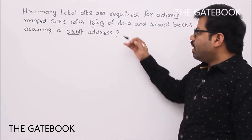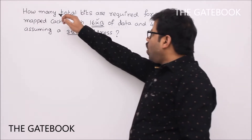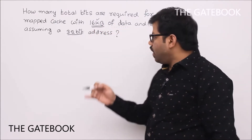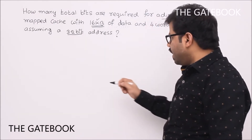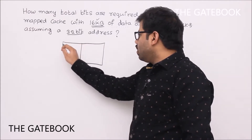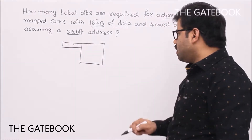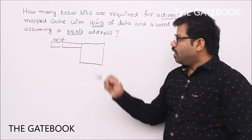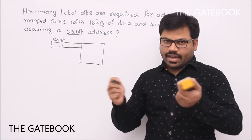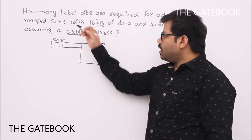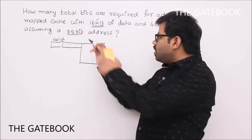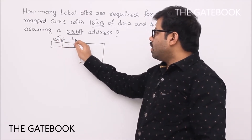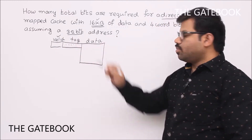The question is how many total bits are required — not just the data bits (16 KB), but the total bits for a cache using direct mapping. For every block, you will have a tag, and there will also be a valid bit. In the gate exam they will clearly mention what fields are present in the cache. For this problem, I'm assuming the cache structure contains: valid bit, tag, and data.